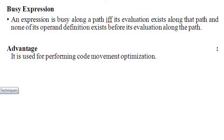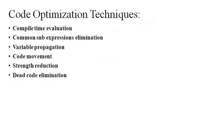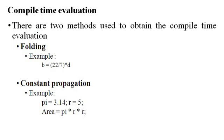So these four are data flow properties. Then, code optimization techniques — there are many techniques available for code optimization. Here I discussed some basic code optimization techniques: compile time evaluation, common sub-expression elimination, variable propagation, code movement, strength reduction and dead code elimination.